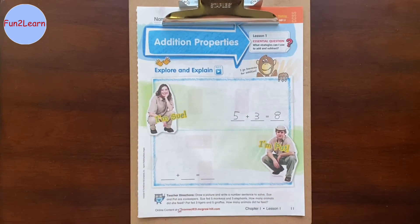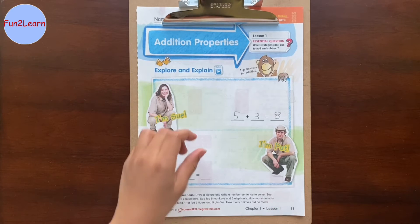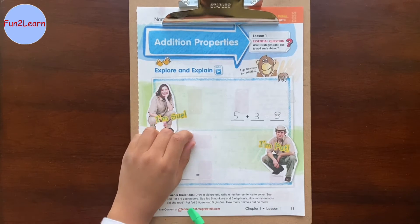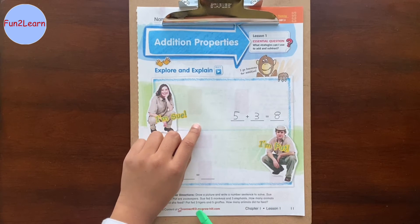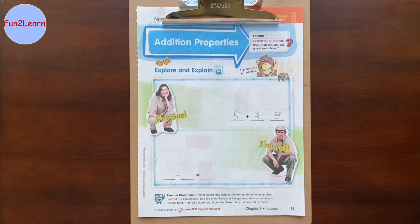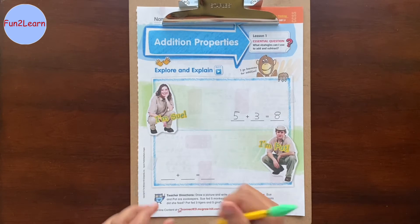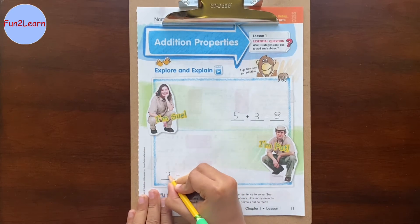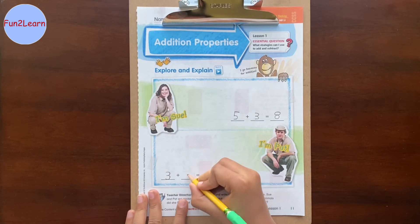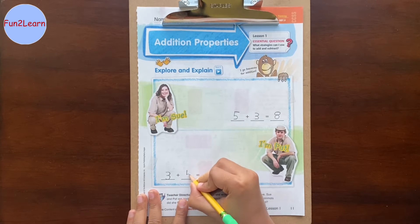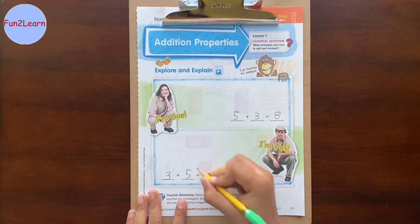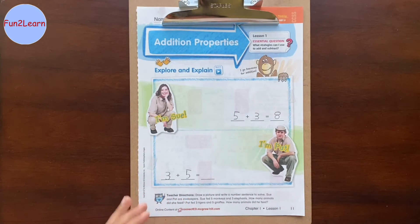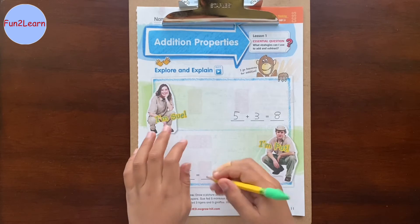Now, this is Pat. Pat fed 3 tigers and 5 giraffes. That is 3 plus 5. So the answer is 8.